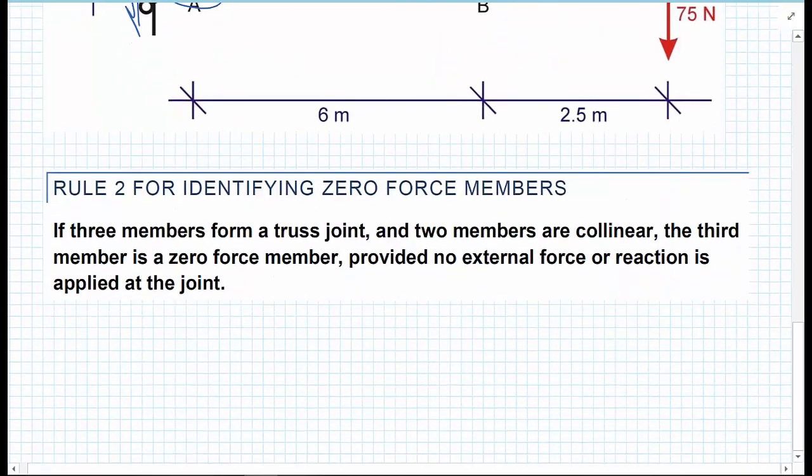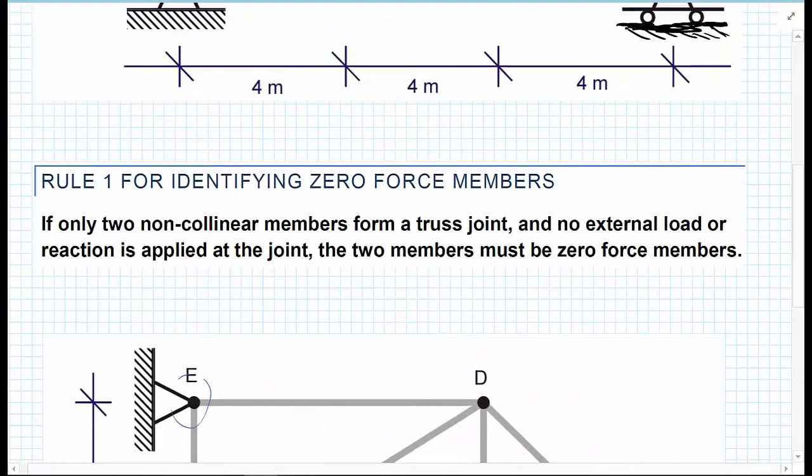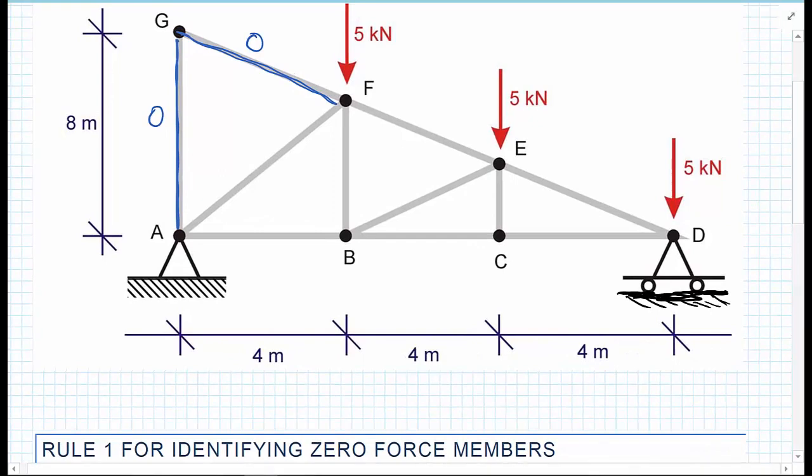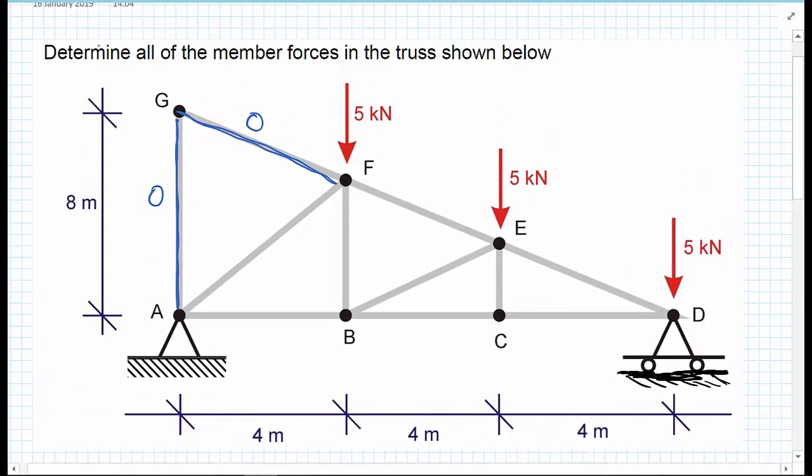Two quick things that can help you out with speeding up these method of joint problems. Look especially towards the edges of trusses, where you have two members, no external forces. Here at G we're looking, no external forces, must be a zero force member. We're going to look again at that second rule we identified.